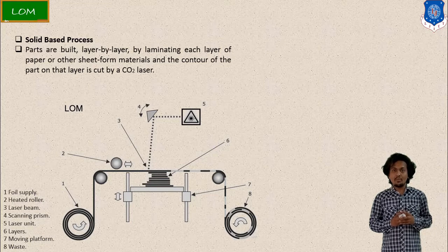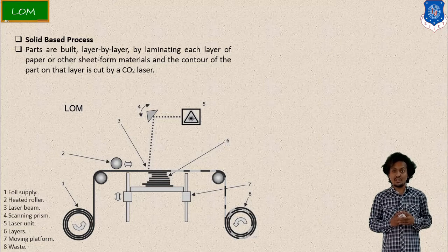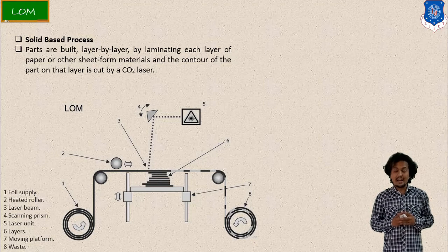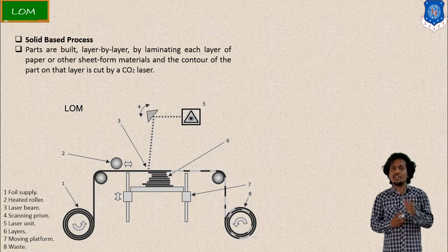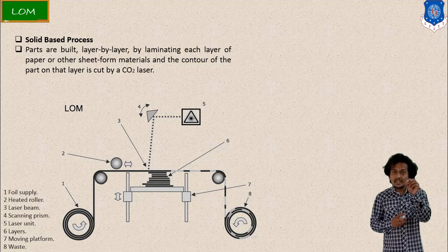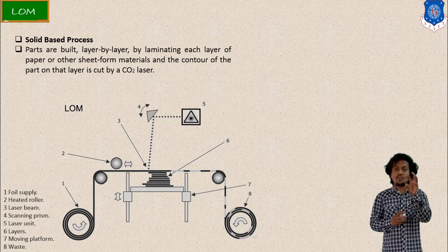In laminated object manufacturing, the material can be built layer by layer. The raw material is available in the form of paper or a thin solid sheet. Two spools or two rollers are used for feeding this sheet material, supplying the paper-form raw material into the process.